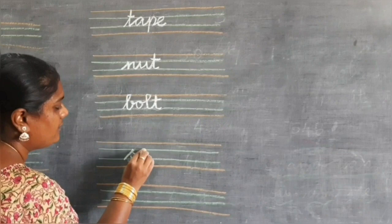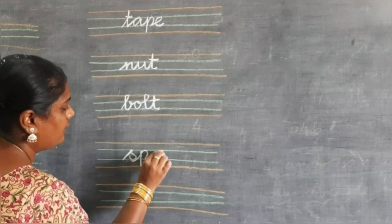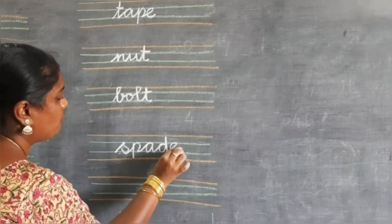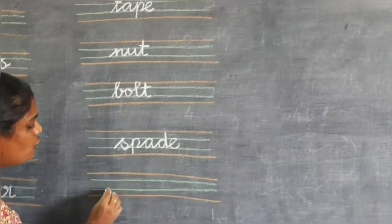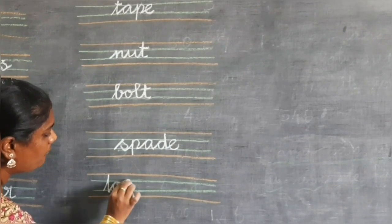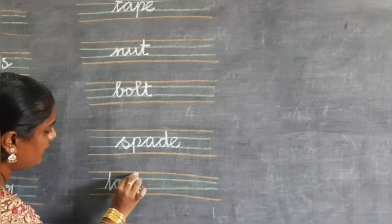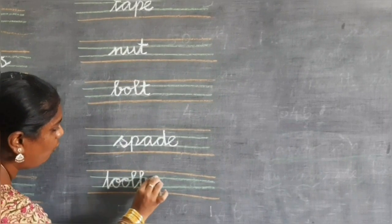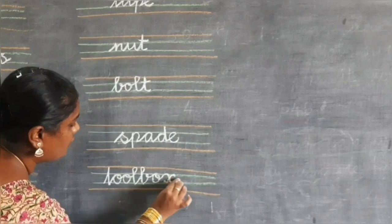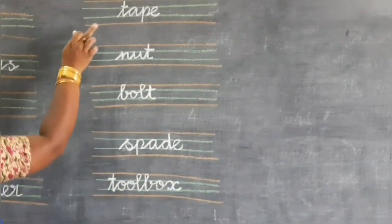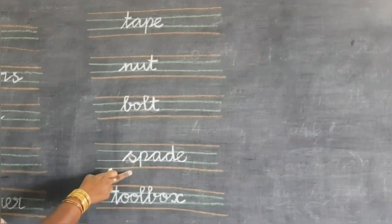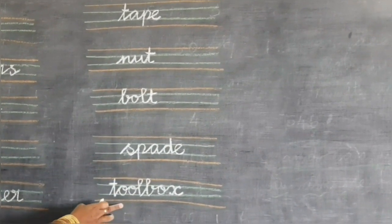Spade: S-P-A-D-E. Toolbox: T-O-O-L-B-O-X. Nail, bolt, spade, toolbox.